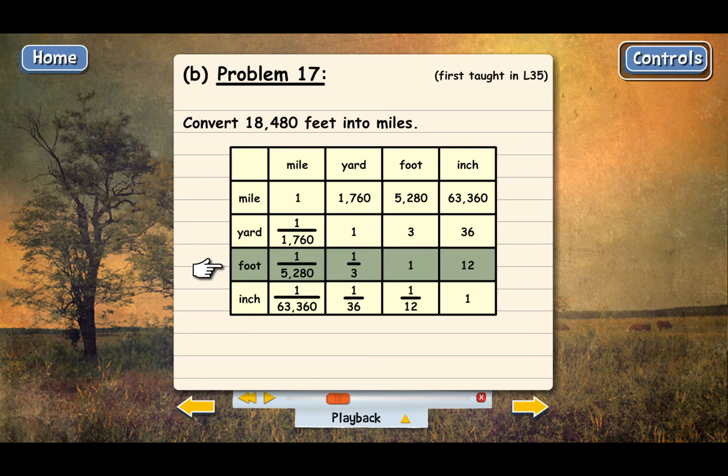And next we need to go to the right until we get to the miles column. And since this is the miles column, we don't need to go too far. It's the very next block. And as you can see, the number in that block is 1 over 5,280.